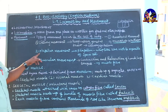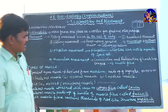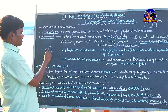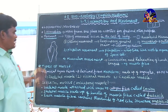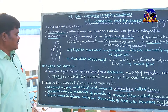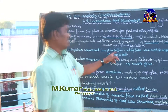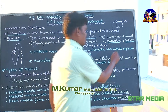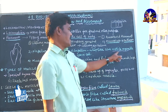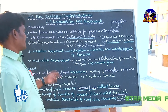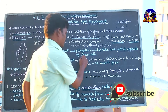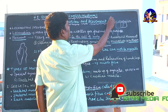The third type is flagellar movement. In Euglena, there is a flagellum — a whip-like structure that moves the organism from one place to another. The flagellum is a motile organ, meaning an organ used for movement. With the help of this flagellum, the organism moves from one place to another.